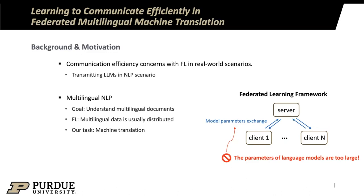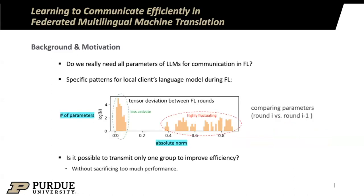But considering language models with a large amount of parameters, transmitting them in a federated learning setup will cost a lot of resources and time. We started by thinking about the question: is it possible to communicate partial parameters to improve efficiency during federated learning?